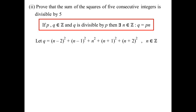Rather than going N, N+1, N+2, N+3, N+4, I'll use symmetry to my advantage — it becomes easier. So if the middle one is N, I can write N−2, N−1, N, N+1, N+2. Those are five consecutive integers, and the advantage is I can add the squares much more easily because all the middle cross-terms will cancel.